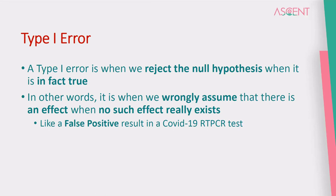It is when we wrongly assume that there is an effect when there exists no such effect. If there is a Type 1 error, we are incorrectly concluding that no such effect exists.